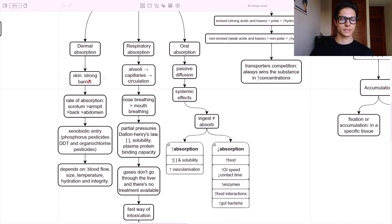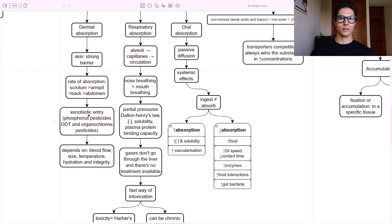The dermal absorption - we have the skin, it's a strong barrier but not strong enough to block everything. So the rate of absorption depends also on the part of the body, being the scrotum followed by the armpit, the back and the abdomen, the parts of the body where the absorption is higher. The xenobiotic entries such as phosphorus pesticides and organochlorine pesticides - these two are the main toxics that can go through the skin. The DDT is a very known one. It depends on the blood flow of the area, the size, the temperature, the hydration of the skin - more hydration, more absorption - and the integrity of the skin. If we have a wound, then the absorption is going to be higher.